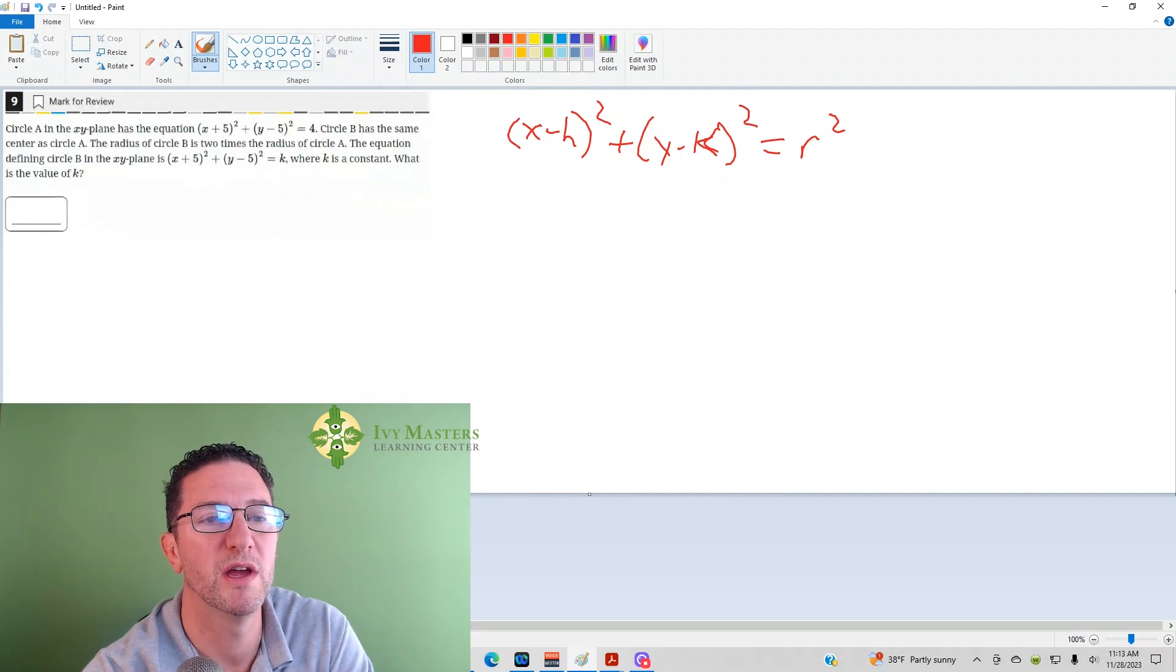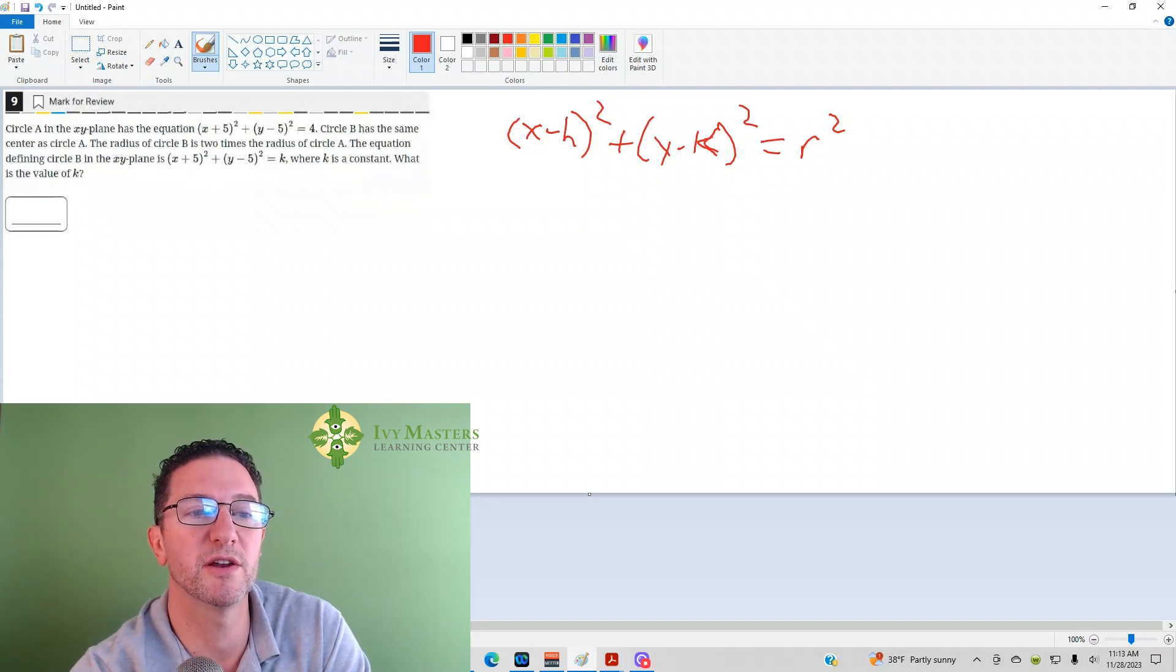Notice it says plus 5, minus 5, so (x + 5)² and (y - 5)² for both, so the center would be (-5, 5) in that case because it's minus h, minus k, and the center is positive h, positive k.